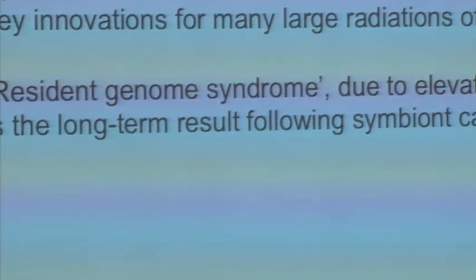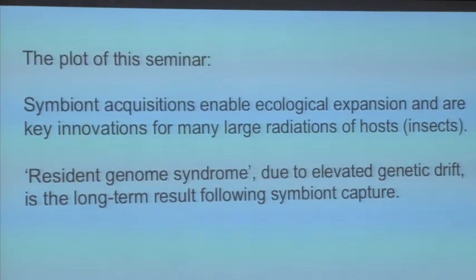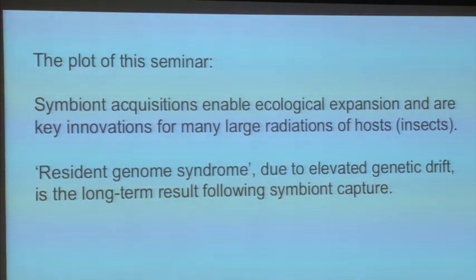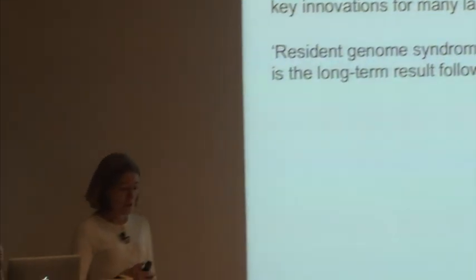When these symbionts are vertically transmitted — usually down matrilines, from mother through eggs — you get what I'll refer to as the resident genome syndrome, which results from a very different population structure. Suddenly, instead of living in a number of places with different strains and lots of recombination, you have one single clone being transmitted vertically down a matriline of insects, no longer interacting genetically with any other strain — a clonal population structure with a much smaller population size.